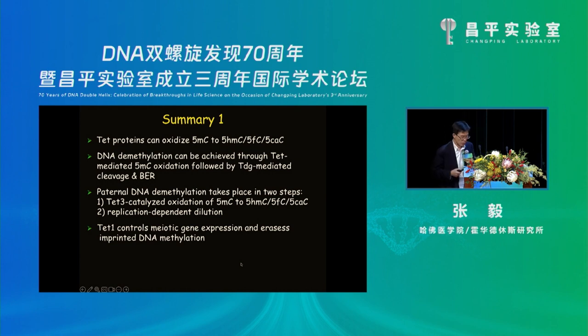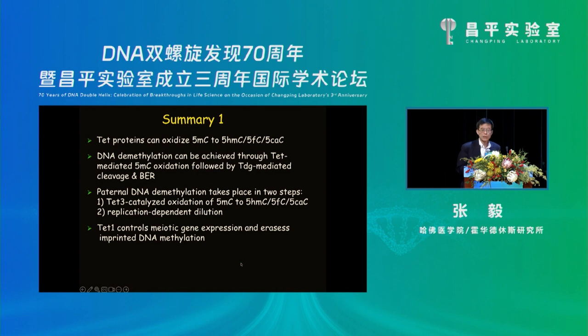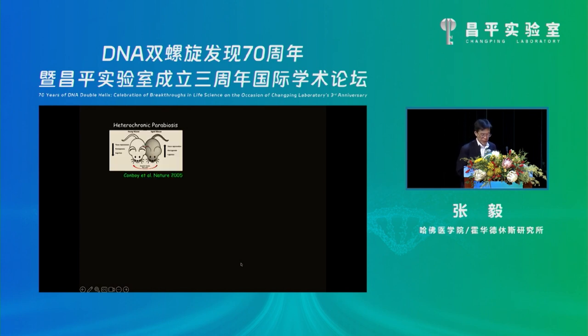To summarize our TET work: TET proteins can oxidize 5-methylcytosine to generate all three oxidative states. DNA demethylation can be achieved through TET-mediated oxidation followed by TDG-mediated cleavage and base excision repair, and in paternal DNA demethylation it takes place by oxidation followed by replication dilution. Now I want to switch gears and tell you something we are currently working on — and that is about aging.